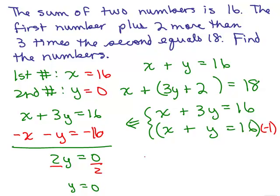Let's check. The sum of two numbers is 16. Yep, because 0 plus 16 certainly does add up to 16. Now it says the first number, 16, plus 2 more than 3 times the second.